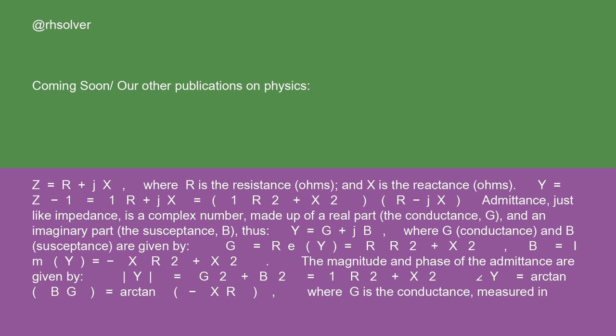The magnitude and phase of the admittance are given by |Y| equals √(G² + B²) equals 1/√(R² + X²), angle Y equals arctan(B/G) equals arctan(-X/R).